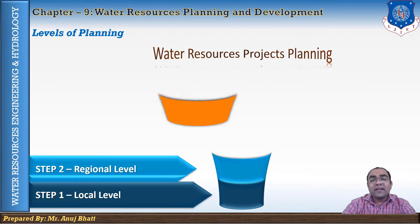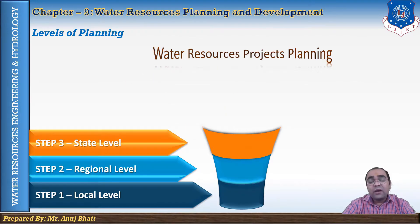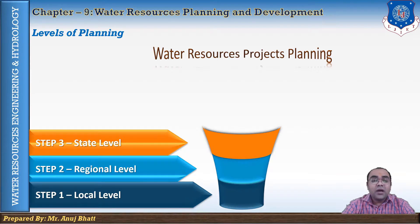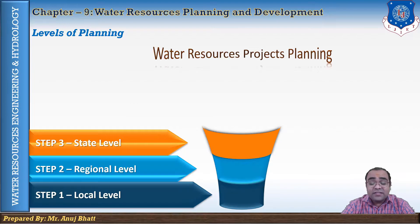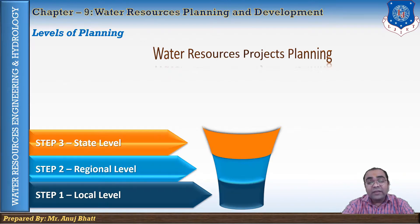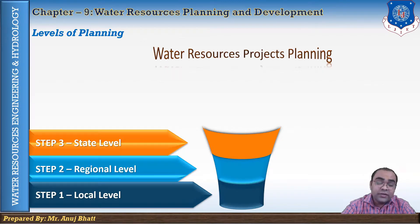The third level is the state level. When regional level planning covers several districts of a state, that is known as the state level plan. For example, Kadana Dam in Gujarat over the Mahi river, serving districts like Kheda, Anand, and Vadodara. The Narmada water supply pipeline network in Saurashtra is also a state level water resource project.